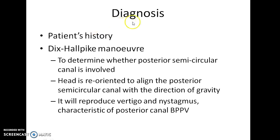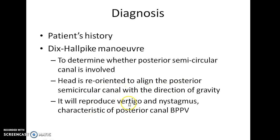How do you diagnose a case of BPPV? The patient gives a typical history. You can perform the Dix-Hallpike maneuver, which is used to determine whether the posterior semicircular canal is involved. In this test, the head is reoriented to align the posterior semicircular canal with the direction of gravity. It will reproduce vertigo and nystagmus that are characteristic of posterior canal BPPV.